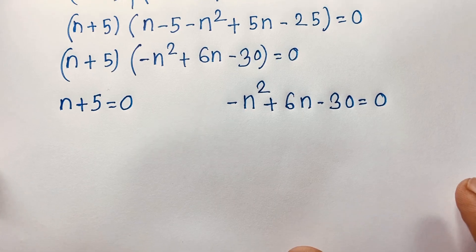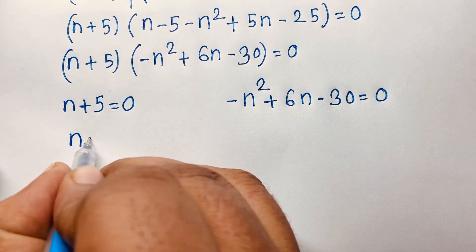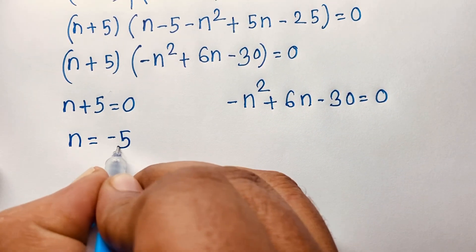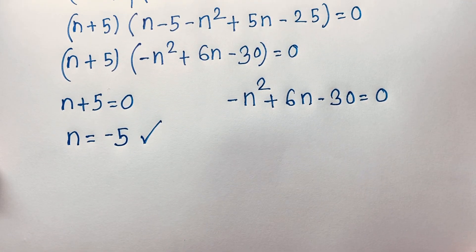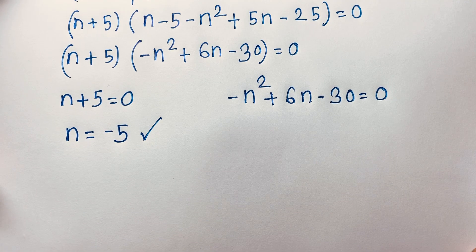From the first case, n plus 5 equals 0, so n equals negative 5. This is our real solution.